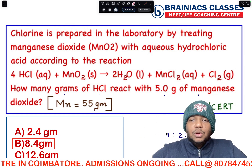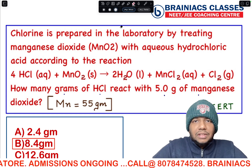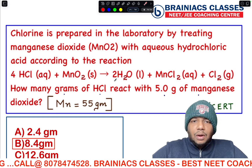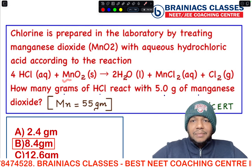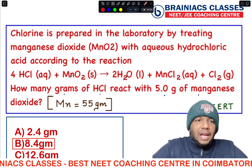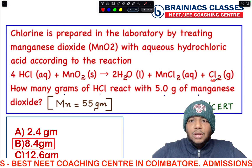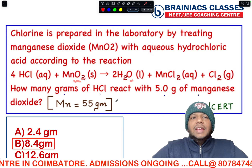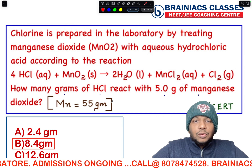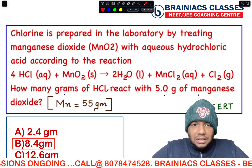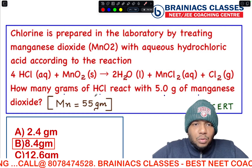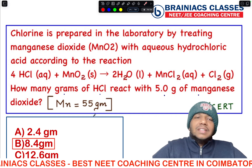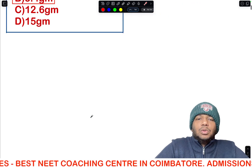The first thing you need to do when a question like this comes is check whether the equation is balanced. Here: 4 hydrogen atoms on each side, 1 manganese atom on each side, chlorine — 4 on the left (2 + 2) on the right, and 2 oxygen atoms on each side. The equation is balanced. Now we need to write the stoichiometric ratio and relate HCl and MnO₂, which are the only two we are interested in.